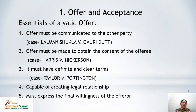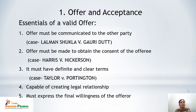Third, the offer must have definite and clear terms. For example, saying 'give me a certain sum of money' is not definite, as the amount may mean rupees 100 to one person and rupees 10,000 to another. In absence of definite and clear terms, the offer cannot be a valid offer. This is explained in the case of Taylor versus Pottington.